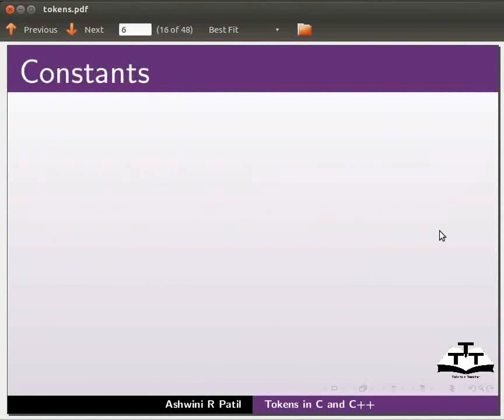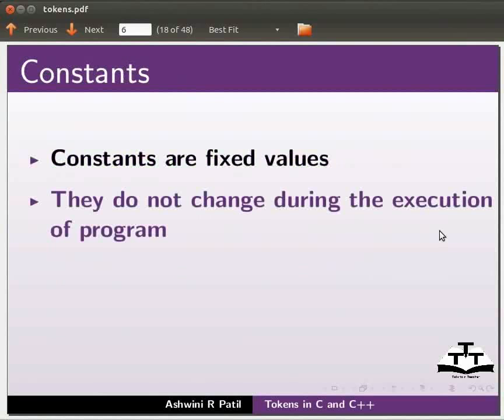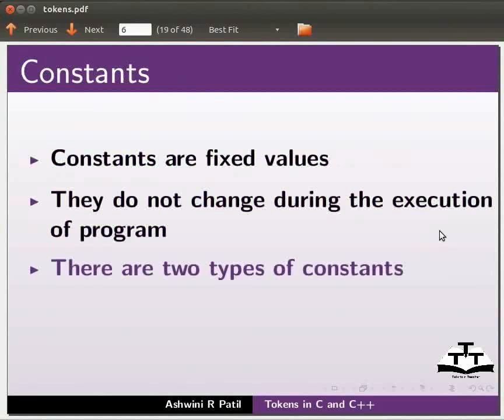Constants are fixed values. They do not change during the execution of a program. There are two types of constants, numeric constants and character constants.